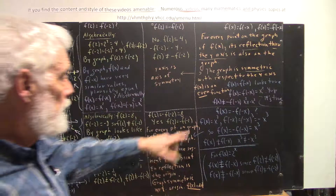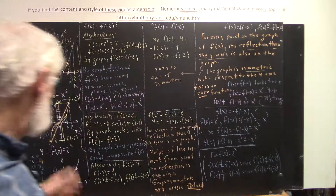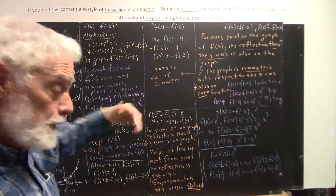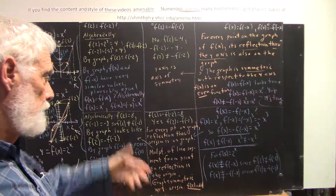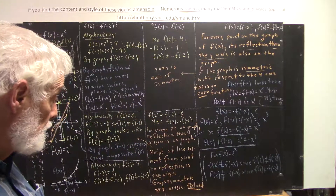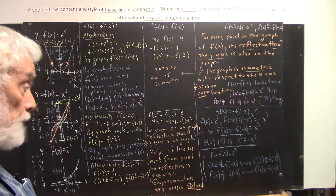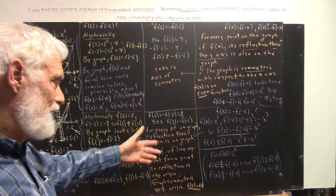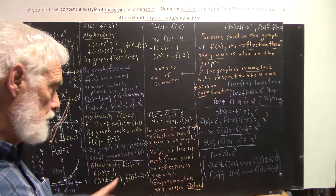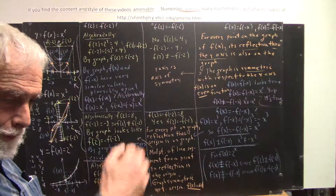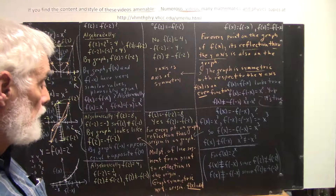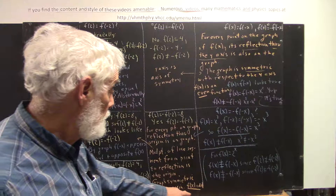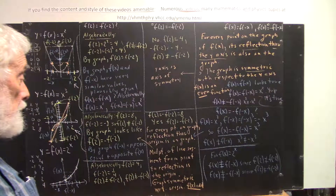If f(x) equals negative f(-x) — illustrated by the cubic example — then all these things hold: every point in the graph has its reflection through the origin, and that reflection is on the graph. That's equivalent to saying the midpoint of the line segment between the point and its reflection is the origin. We say that the graph is symmetric with respect to the origin, and the function is odd.